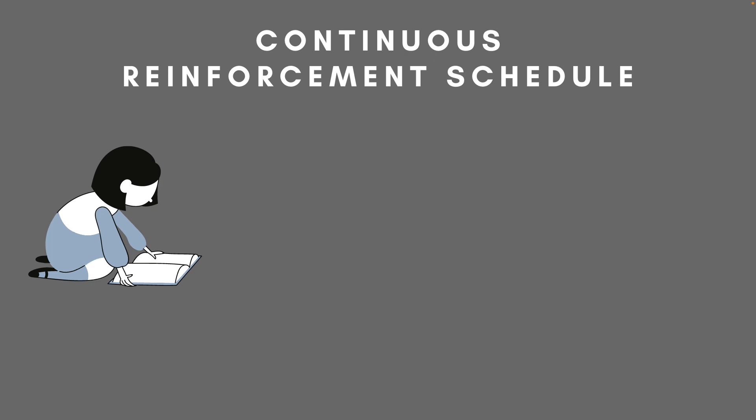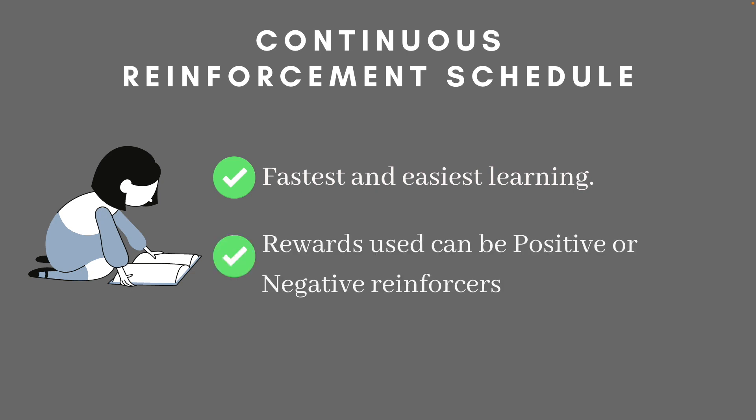There are a few characteristics of this particular reinforcement schedule. First of all, it is one of the most effective schedules when you are in the initial stages of learning a behavior, because it allows you to implement a strong association between a certain behavior and its consequences. Continuous reinforcement schedules can involve the usage of both positive and negative reinforcers when encouraging or reducing a particular behavior.